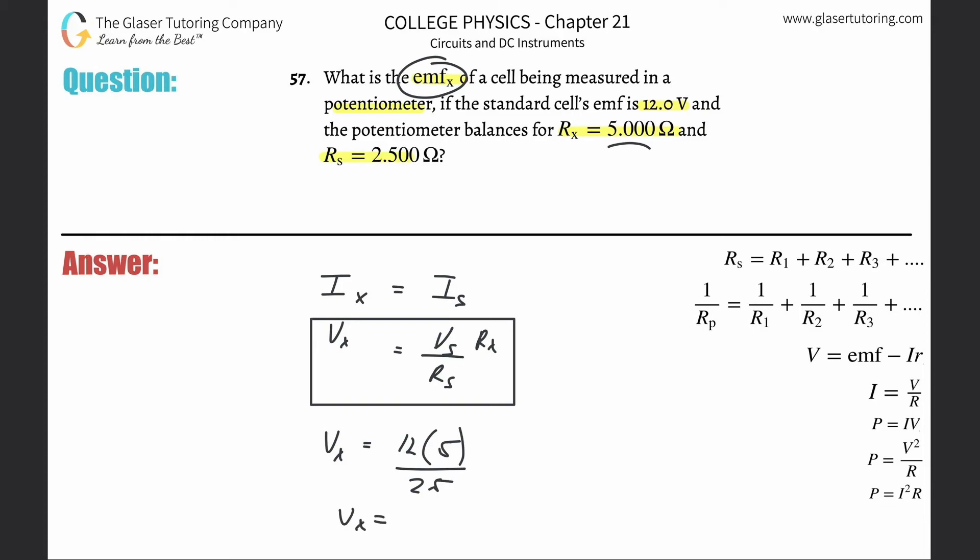And that's all there is to it. So 12 times 5 divided by 2.5, and it comes out to 24 volts. 24 volts.